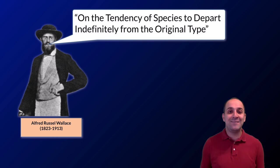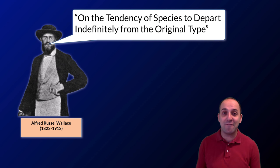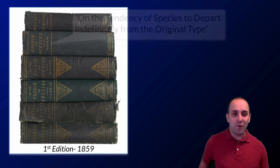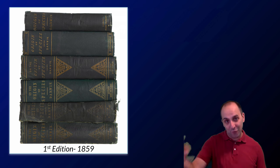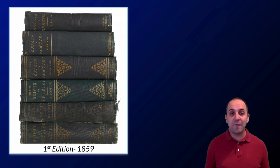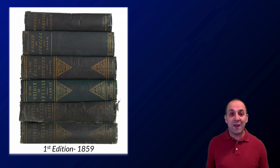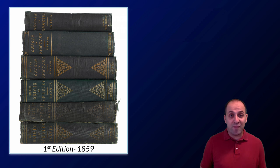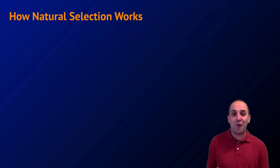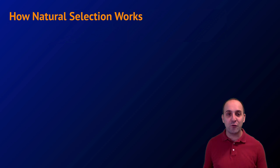Wallace's paper was titled On the Tendency of Species to Depart Indefinitely from their Original Type, but Darwin had a catchier title. He published his thoughts in the most famous book in all of biology — On the Origin of Species — a book that would see six different editions over the course of his life. It's important to recognize that while it's typical to give Darwin all the credit, Darwin and Wallace both gave each other mutual credit for developing the theory of natural selection.